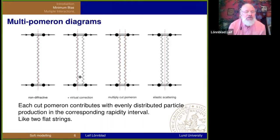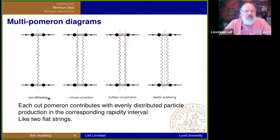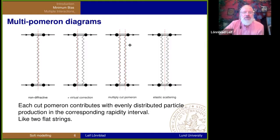If you can exchange one pomeron, you can write down the diagram and place the cut basically wherever you want. Here we have a non-diffractive event — a cut pomeron. Here is a two-pomeron exchange, but only one is cut; that corresponds to a virtual correction to the non-diffractive cross-section. We can also cut many pomerons, and this is what we call multiparton interaction in our event generators — more than one fairly soft gluon-gluon interaction per event.